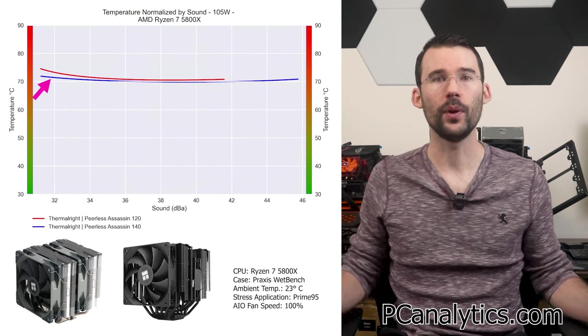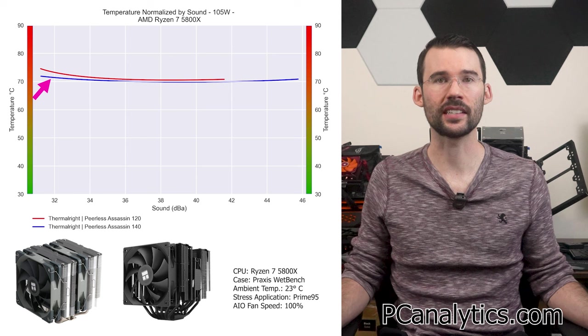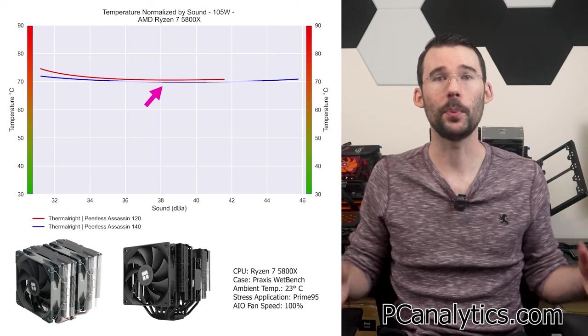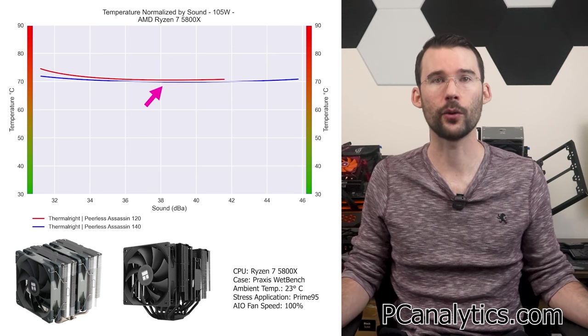As we increase the wattage to 105 watts, we can see that the Peerless Assassin 140 has a slight advantage at the lower decibels, but this difference shrinks to minimal levels as the fans approach higher noise levels.